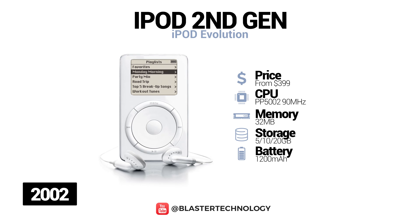The second generation of the iPod appeared in 2002 and was similar to the previous model, with the top being redesigned and the mechanical scroll wheel replaced by one more sensitive to touch. This generation was compatible with Windows and had a storage capacity of 10GB or 20GB.